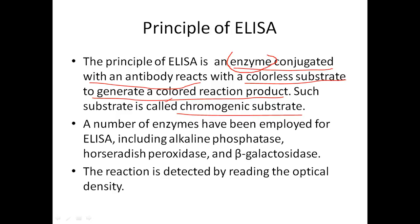The enzyme will react with the colorless substrate, and this colorless substrate will be changed into a colored reaction product. According to the concentration of the color product, the concentration of the given antigen or antibody can be determined. After the enzyme is applied to the substrate, a color reaction product will be formed.